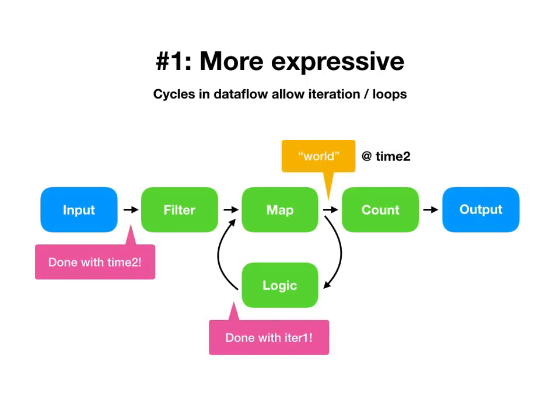Imagine that the logic operator has said 'we're iterating a little bit — I propose I'm done sending data at iteration one.' The count operator might notice it's ready to process something at time two; we're doing this iterative thing where we're counting up iterations. The map operator might take data from logic and produce some more output data.